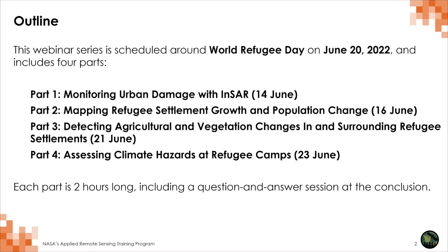We started with monitoring urban damage within SAR last week, then moved towards mapping refugee settlement growth and population change, and then agricultural and vegetation change. Today we're at the other end of the spectrum, thinking about conditions at the location — exogenous conditions at refugee settlement locations — and thinking about long-term habitation, recurrent risk, and persistent hazards at refugee camps.